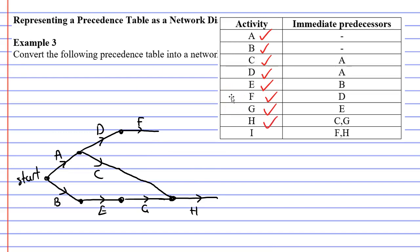Excellent. Now moving on to activity I, we can see that it has the immediate predecessors F and H. And it's not too difficult to join F and H to the same vertex.